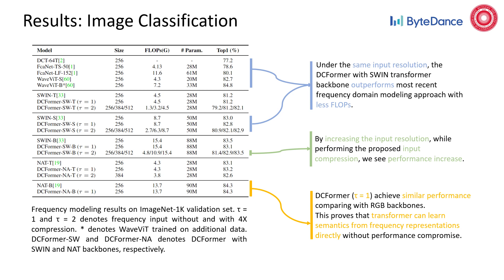It is also worth mentioning that the DC former without input compression achieves similar performance compared with the same backbone taking RGB inputs. This proves that the transformer can learn semantics from frequency representations directly without performance compromise.